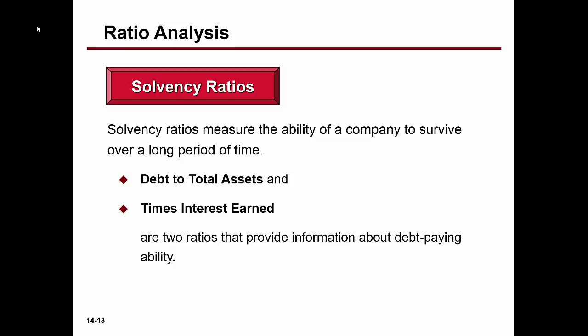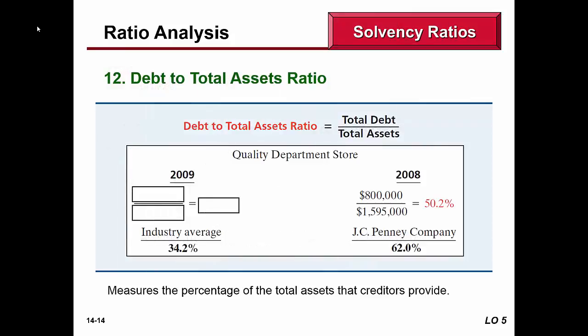Solvency ratios take a longer-term focus. The one we'll focus on is debt to total assets. Over a period of time, how will this company be able to handle its debts as they come due? Instead of just current assets and current liabilities, we include both current and non-current. If debt makes up a large portion of total assets, that situation will start to erode over time — even if the current ratio looks good, they may not be solvent long-term.